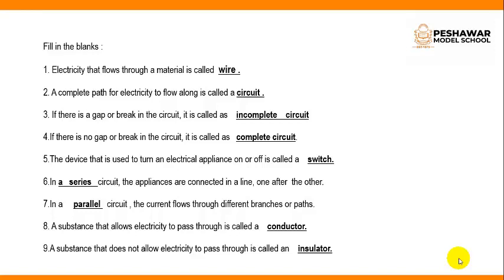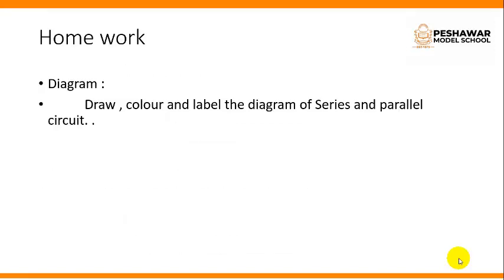Number 6: In a series circuit, the appliances are connected in a line one after the other. Number 7: In a parallel circuit, the current flows through different branches or paths. Number 8: A substance that allows electricity to pass through them is called conductor. Number 9: A substance that does not allow electricity to pass through them is called insulator.